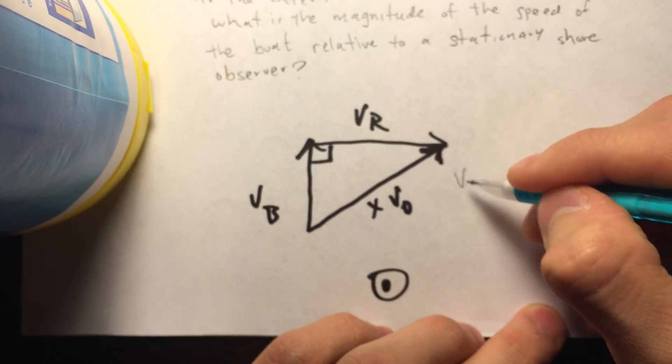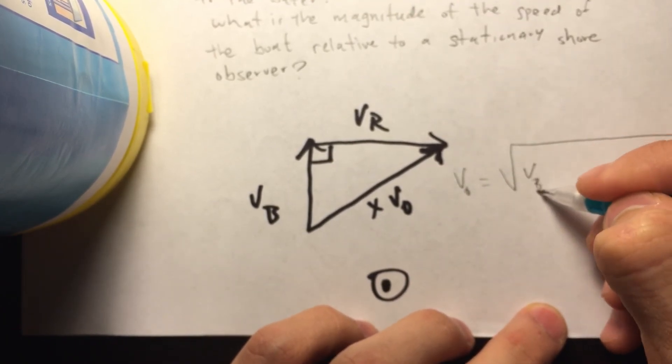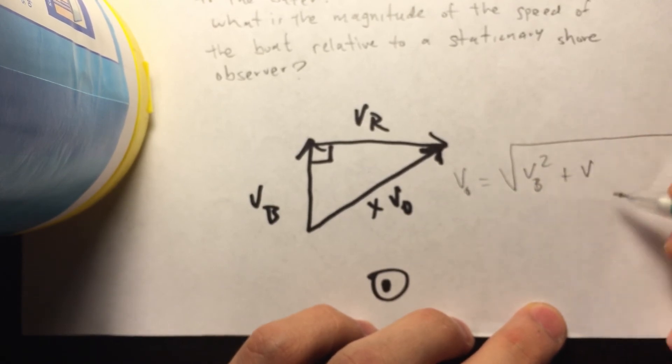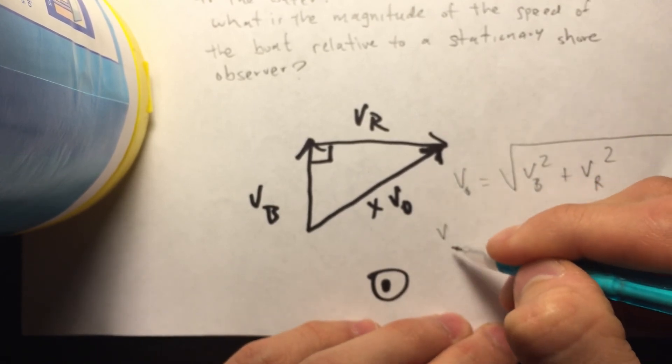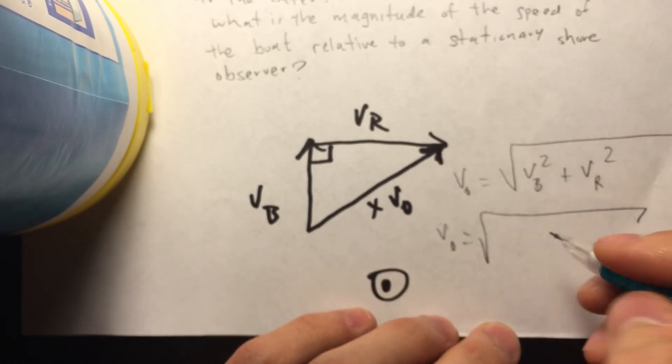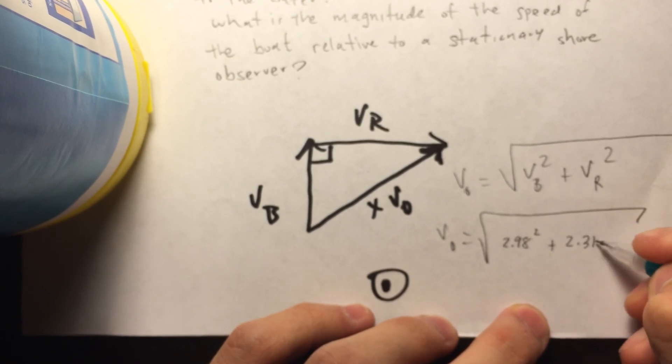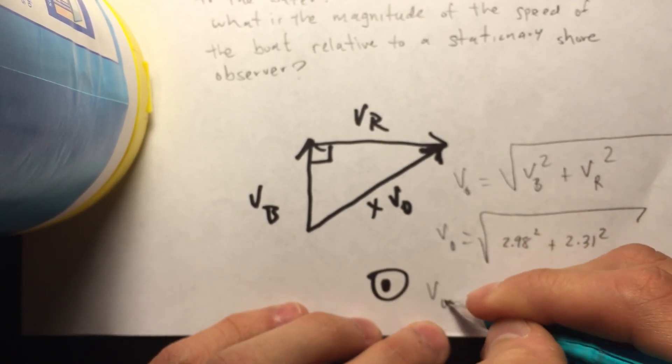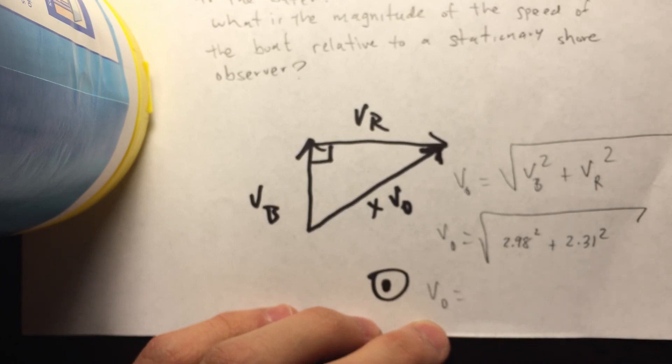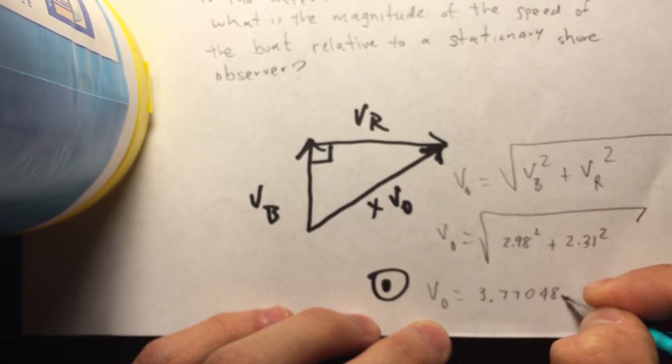So, Pythagorean Theorem states that v naught equals to the square root of vb squared plus vr squared. v naught equals to the square root of 2.98 squared plus 2.31 squared, which gives us a v naught of 3.77 meters per second.